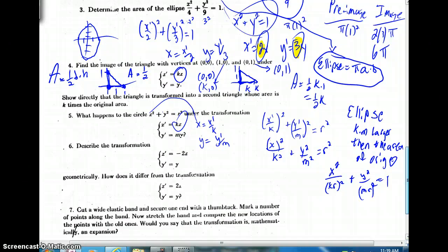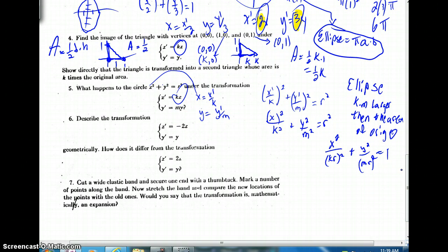All right, let's see. Take a look at number 6. We'll just do this last one, a little shorter video. How does the transformation x' = -2x and y' = y differ from the transformation x' = 2x and y' = y? Well, you know, this second transformation right here is an expansion of factor 2 in the x direction.